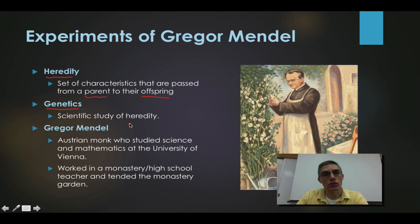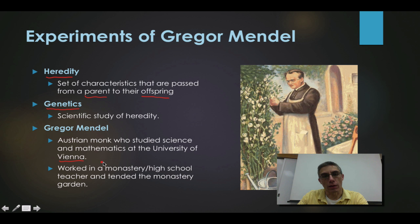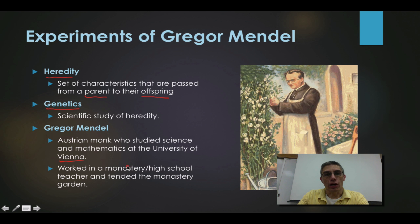This section focuses on one man in particular: Gregor Mendel, considered the father of genetics. He was an Austrian monk, born in 1822, and he studied science and mathematics at the University of Vienna. He worked in a monastery but was also a high school teacher, and while at the monastery he tended what we call the monastery garden.